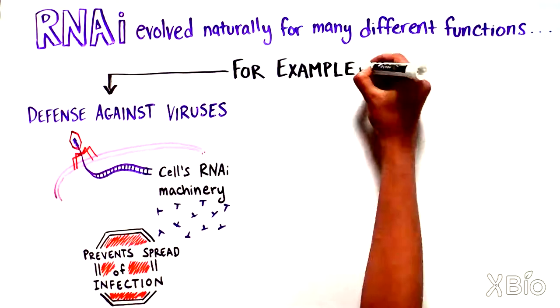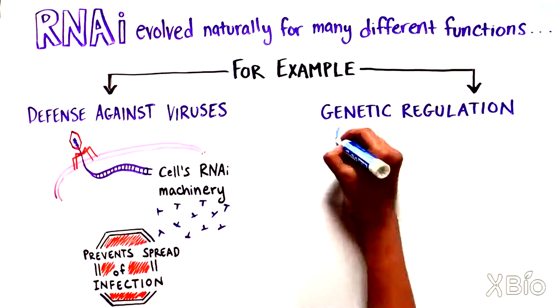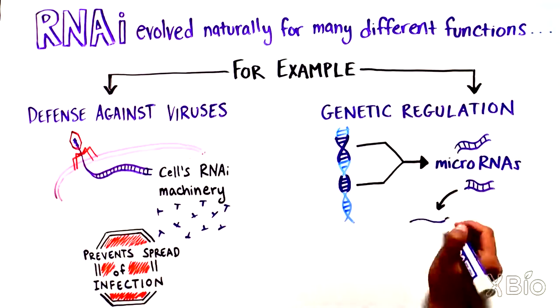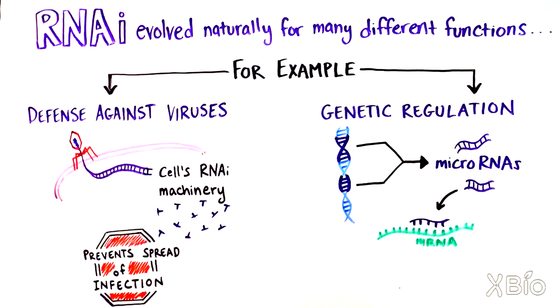RNAi is also an elegant form of genetic regulation. Micro-RNAs are small RNA fragments encoded throughout the genome of many organisms, and they can bind to certain RNA molecules creating double-stranded RNA, which ultimately blocks protein production.